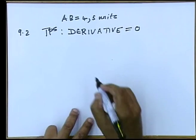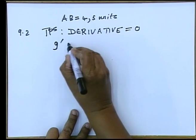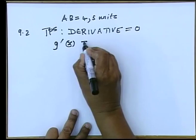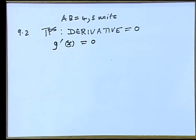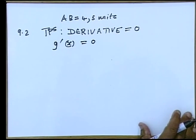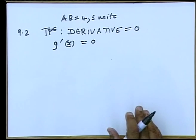So, since the function was g, g dash will equal 0. Right? I'm going to quickly show you the solution, which is 9.2.